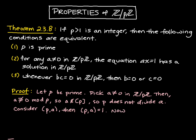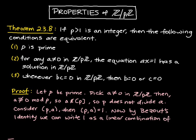Now by Bezout's identity, we can write 1 as a linear combination of p and a. So that means 1 is equal to au plus pv for some integers u and v.